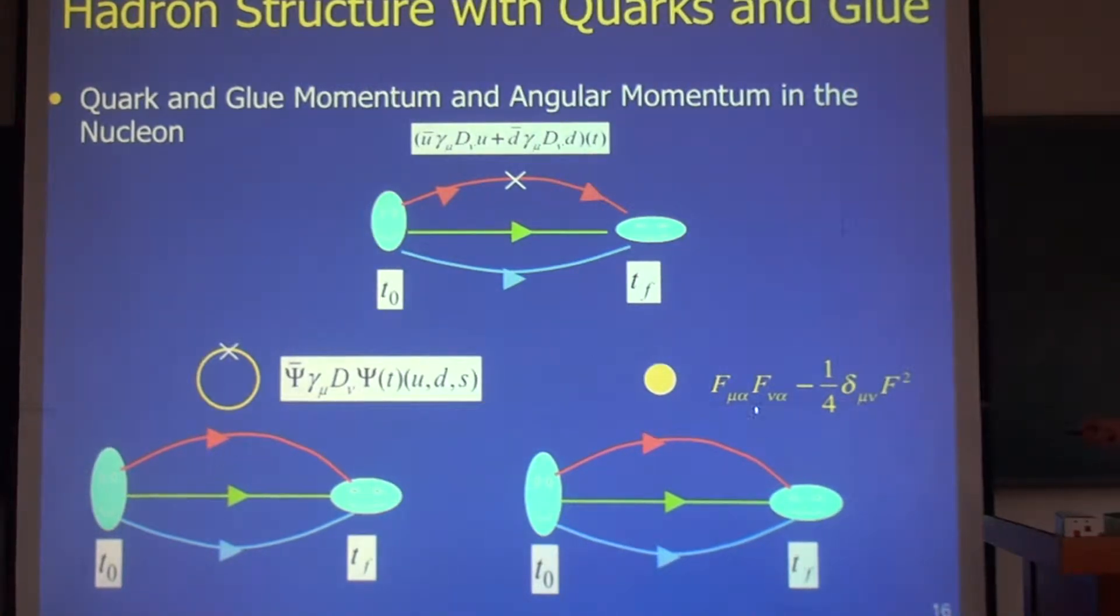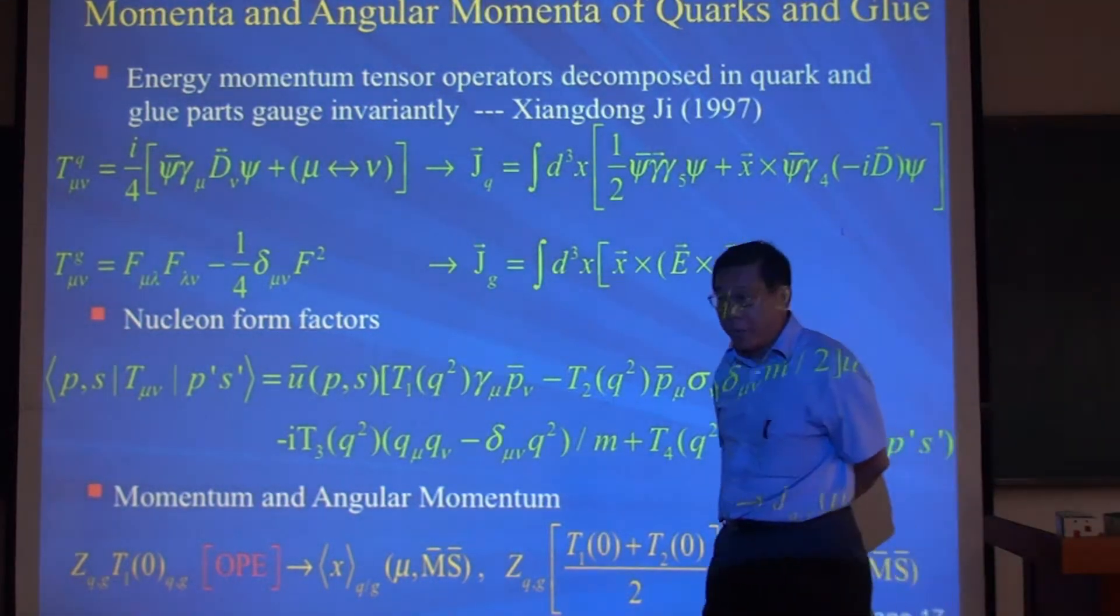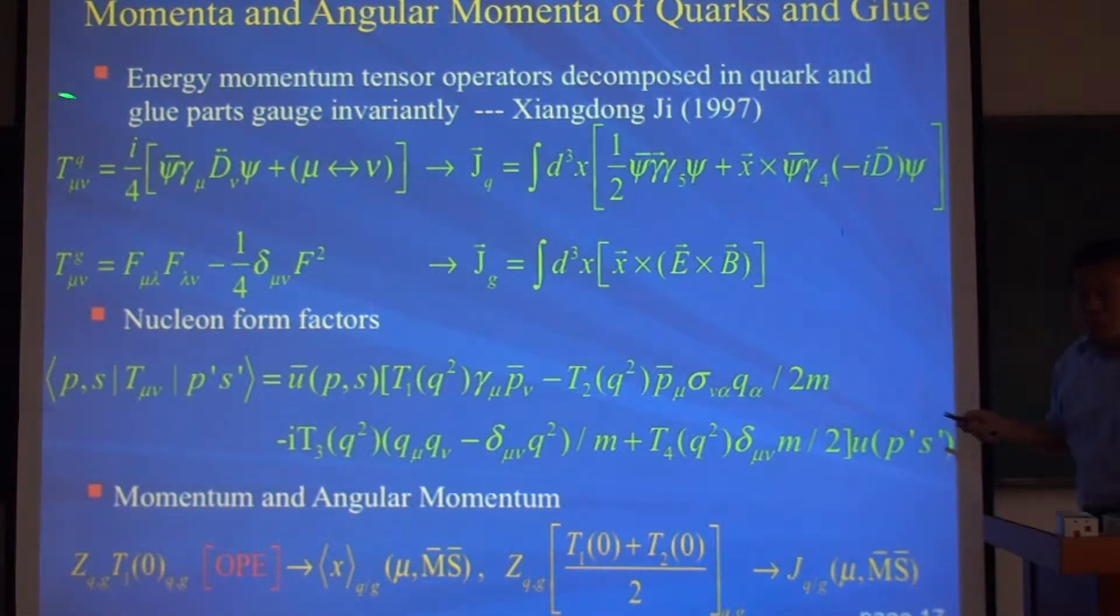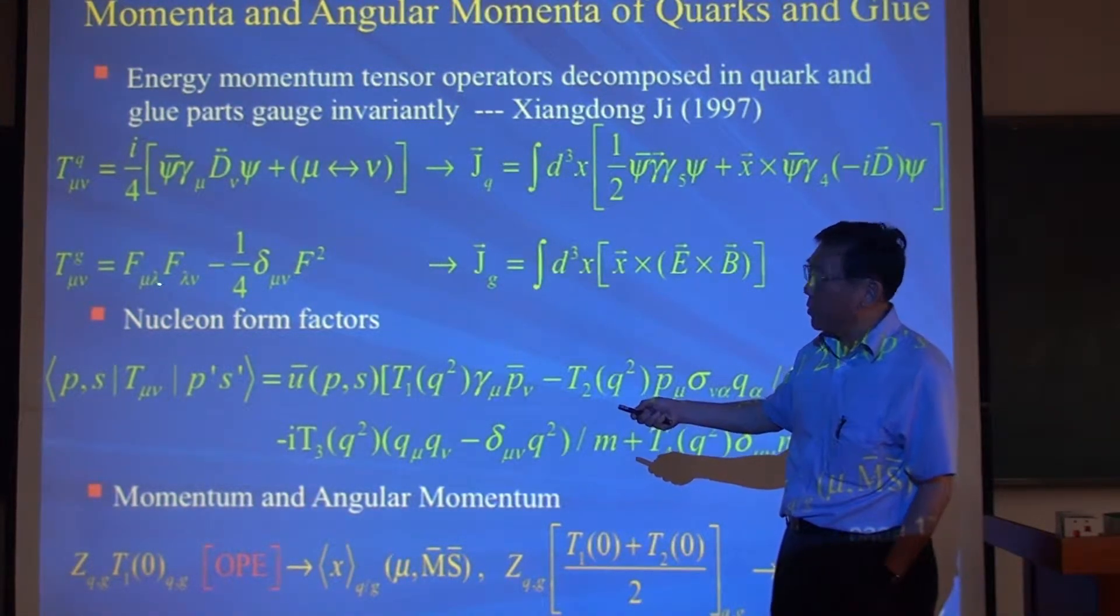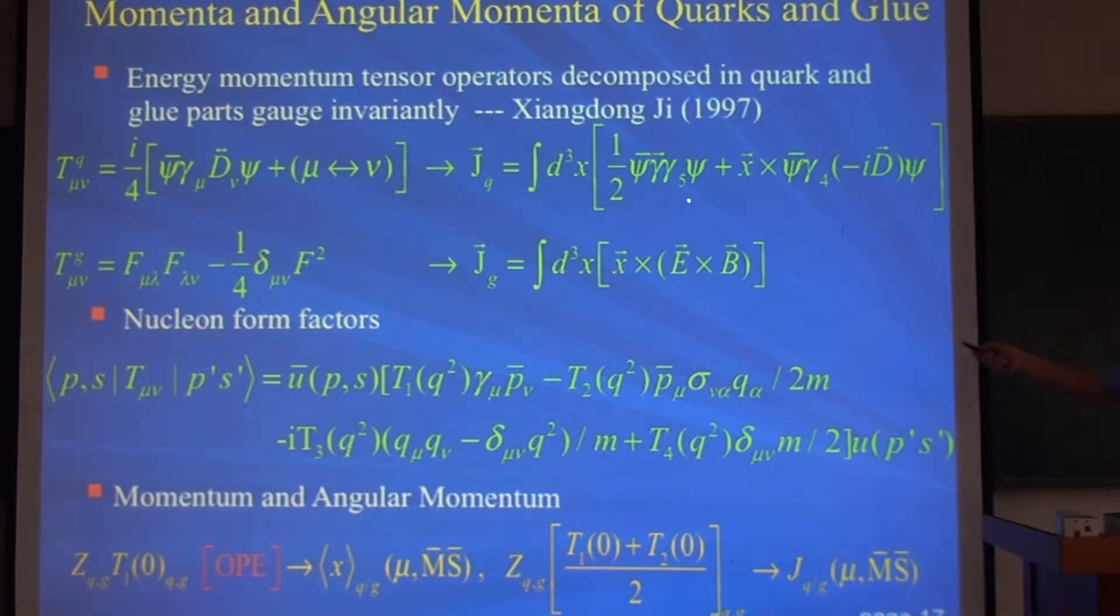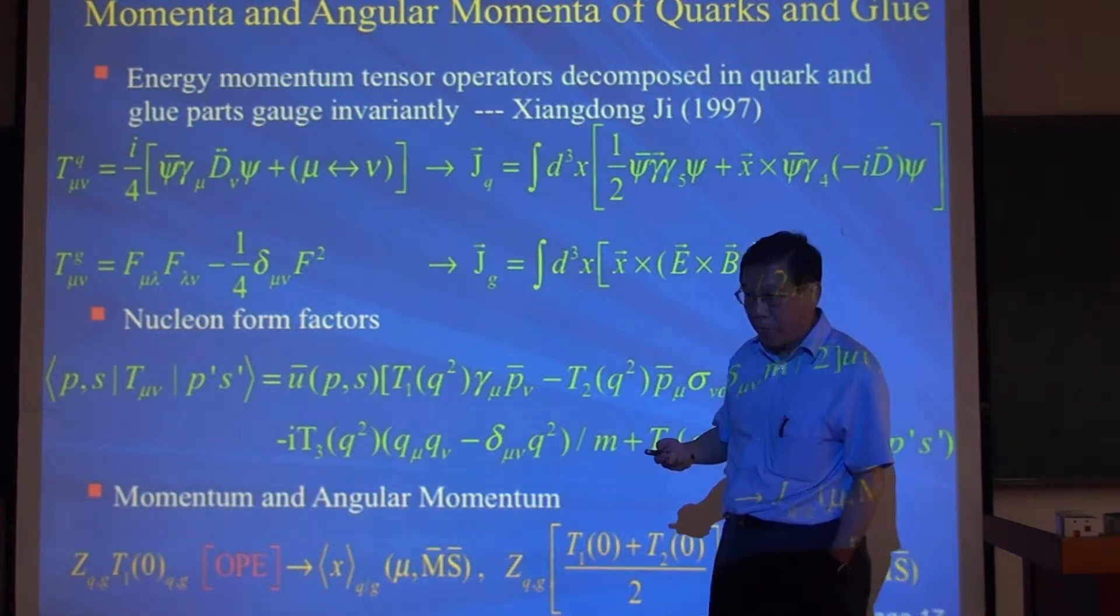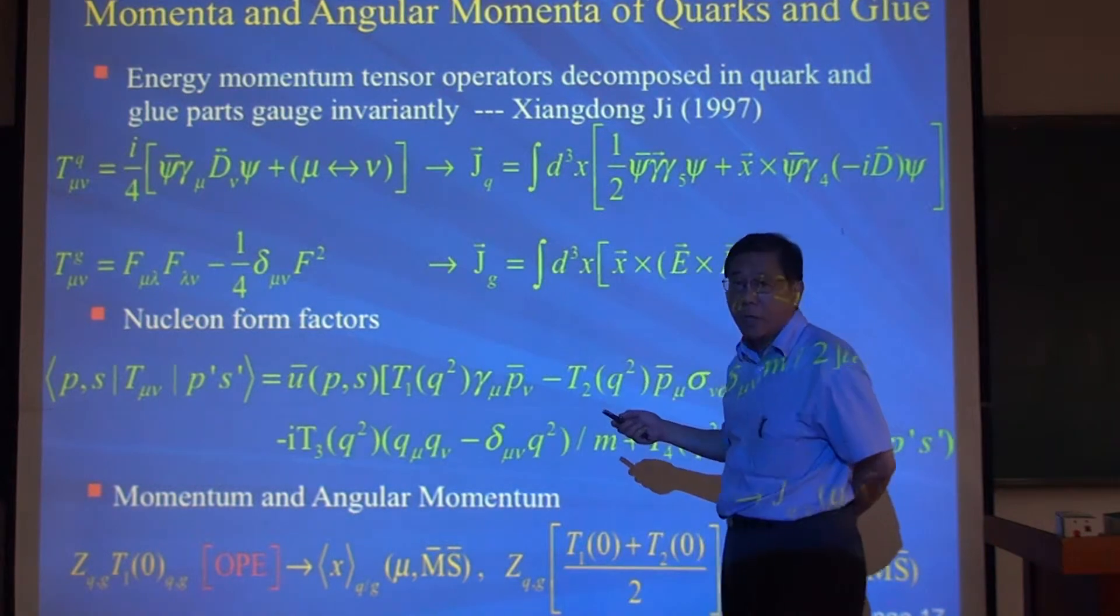Before I do the calculation, I should show the formalism, what operators are used. There's an energy momentum tensor operator decomposed in the quark and gluon part in the gauge invariant way. This was shown first by Ji. The quark one is the gamma mu i D nu part, and the gluon part is F mu nu, the ordinary ones. So if you look at the angular momentum part, the quark spin is gamma times gamma 5. And the gluon operator turns out it's x cross E cross B. These are colored E, colored B. So it's very intuitive.